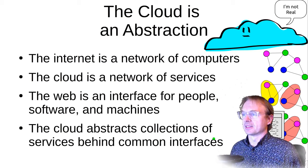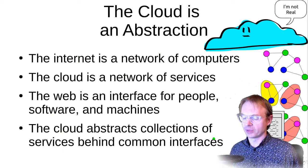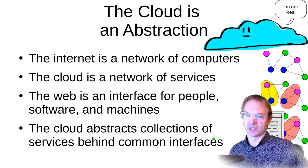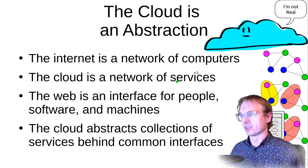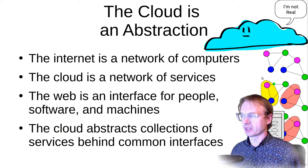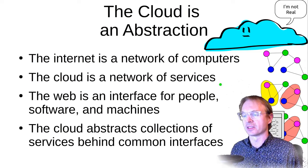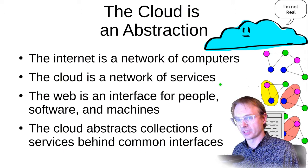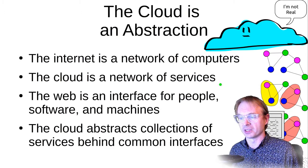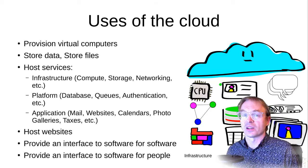Fundamentally, for me the cloud is an abstraction — it abstracts away the fact that we run software on a network of computers that composes the internet. On the internet we communicate between these computers using common protocols such as IP, TCP, and UDP. The cloud is basically an aggregation of these services, and the web itself is essentially an interface between those computers and services for people, software, and machines.